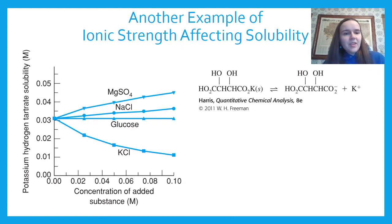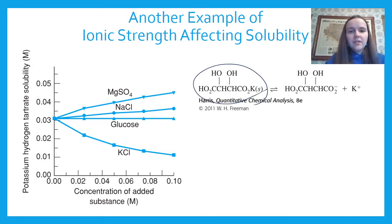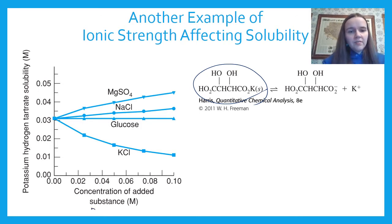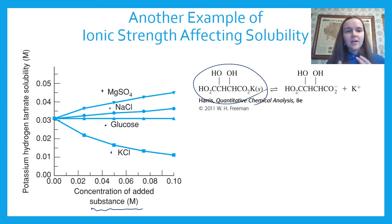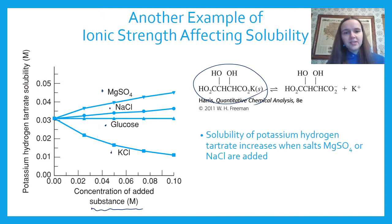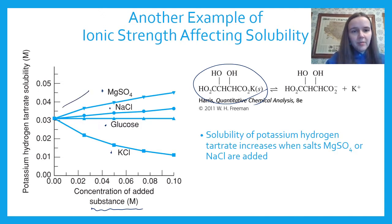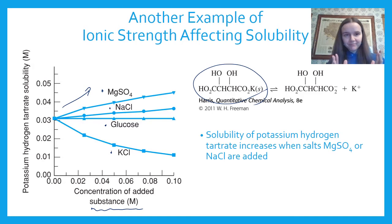Here's another example. We're looking at potassium hydrogen tartrate dissolving. The concentration of added substance is either magnesium sulfate, sodium chloride, glucose, or potassium chloride, and we see what effect that has on how soluble potassium hydrogen tartrate is. The observations are that solubility increases for both magnesium sulfate and sodium chloride — an example of increased solubility of a sparingly soluble salt when an inert salt is present.